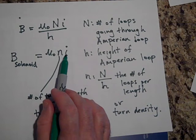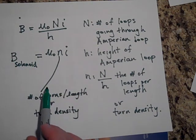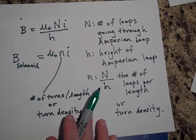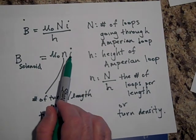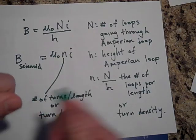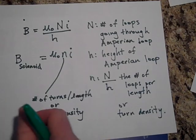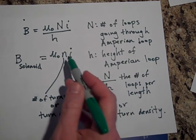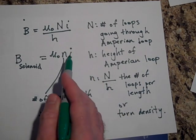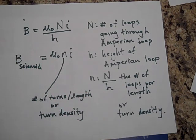Apparently if I double the I, I double the B. If I triple the I, I triple the B. So if I want a really strong magnetic field, I'm going to put a lot of current through a solenoid and I'd like the turn density, how tightly wrapped it is, I'd like that to be way up there. If you've got a lot of turns per length and you have a lot of current going through there, you can get some really strong magnetic fields inside solenoids.